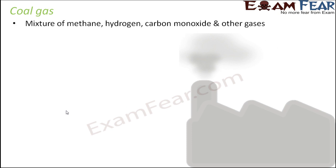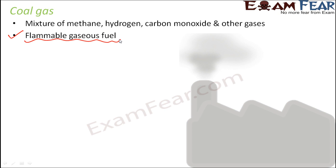Coal gas is a mixture of several gases like methane, carbon monoxide, hydrogen, and small amounts of many other gases. It is mostly used as a source of heat, though in earlier days it was also used as a source of light — hence it was termed 'lighting gas.' It is a flammable gaseous fuel and can be supplied to users via pipeline. Before natural gas supplies came up, coal gas was widely used as a fuel.